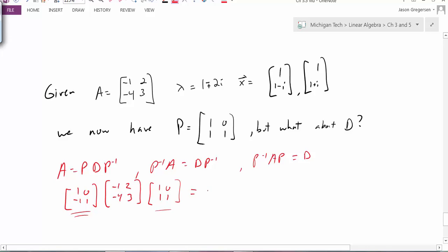So now I'm actually going to do that multiplication. I'll leave that first matrix alone and multiply the second two. When I look at that product, I get 1, 2, negative 1, and 3.